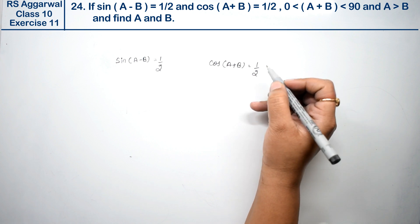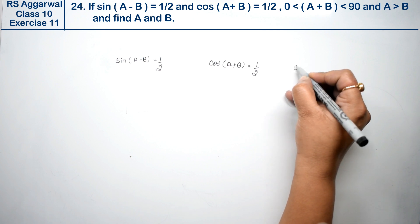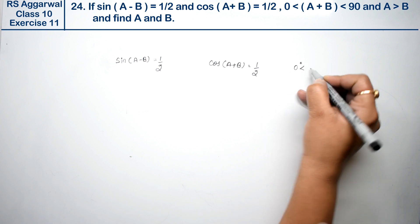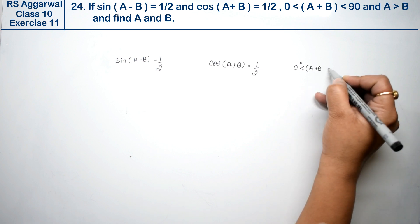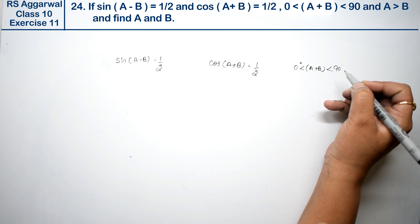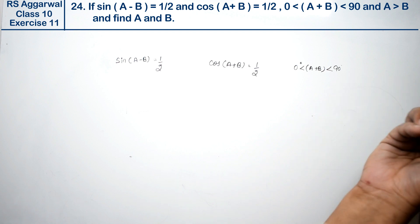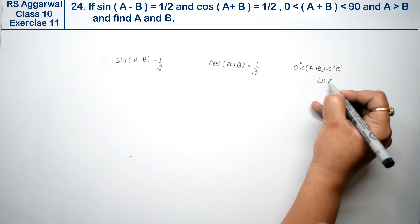The angles must be zero degree se zyada, that is greater than zero degree for A + B, and ninety degree se kam, less than 90 degrees. And angle A is greater than angle B.